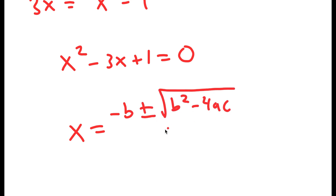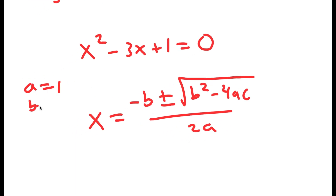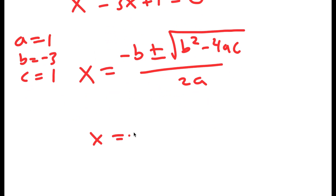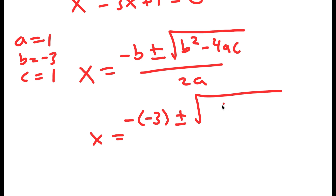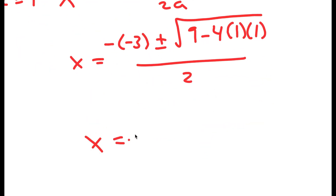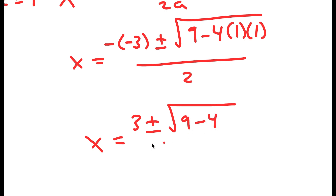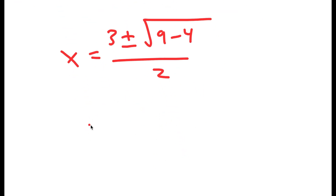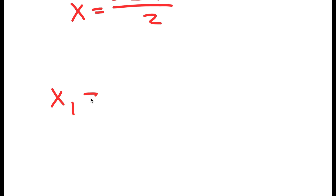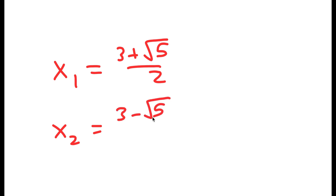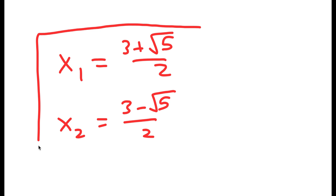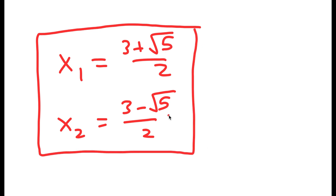In this case a is 1, b is negative 3, and c is 1. So I get x equals negative negative 3 plus or minus the square root of negative 3 squared, which is 9, minus 4 times 1 times 1, all over 2. This gives x equals 3 plus or minus the square root of 5 over 2. So my two solutions are x equals 3 plus the square root of 5 over 2, and x equals 3 minus the square root of 5 over 2. These are my two solutions to this equation.